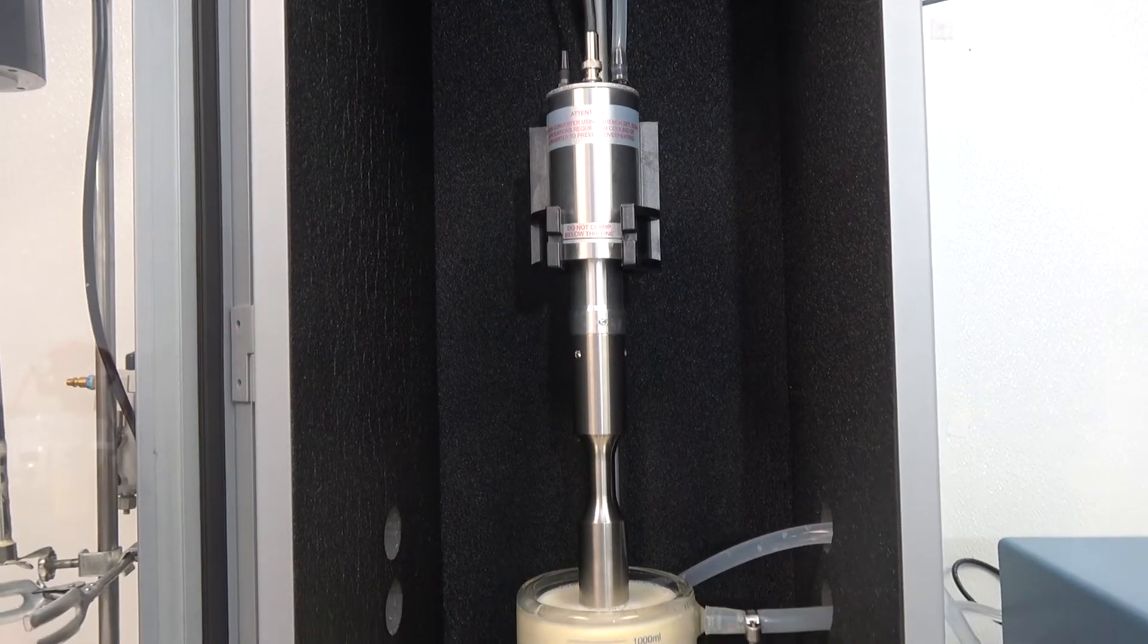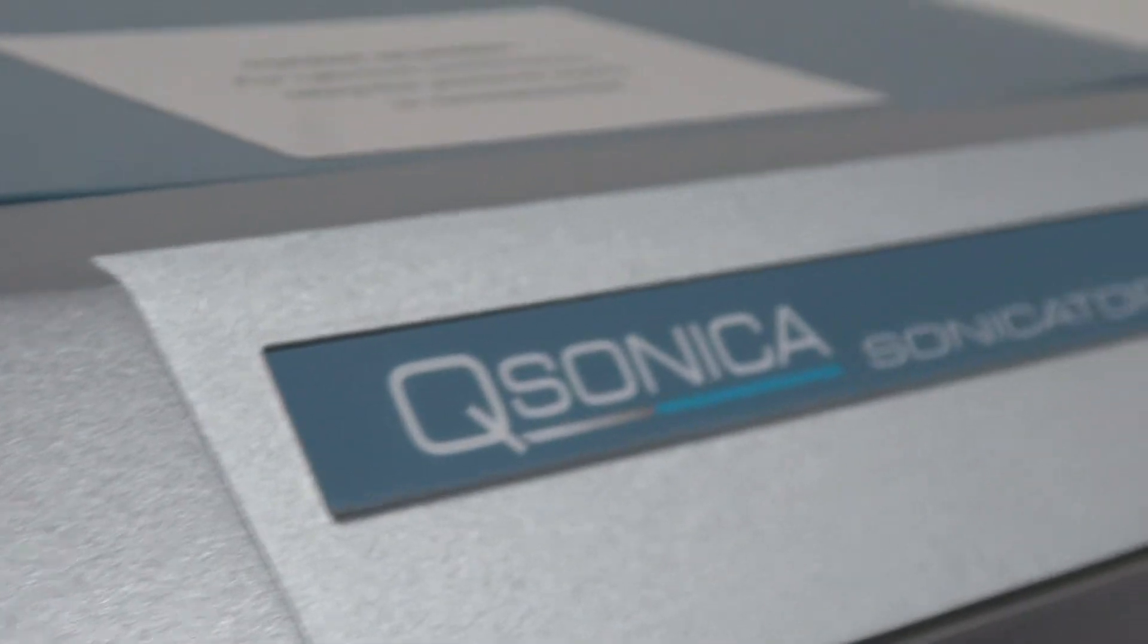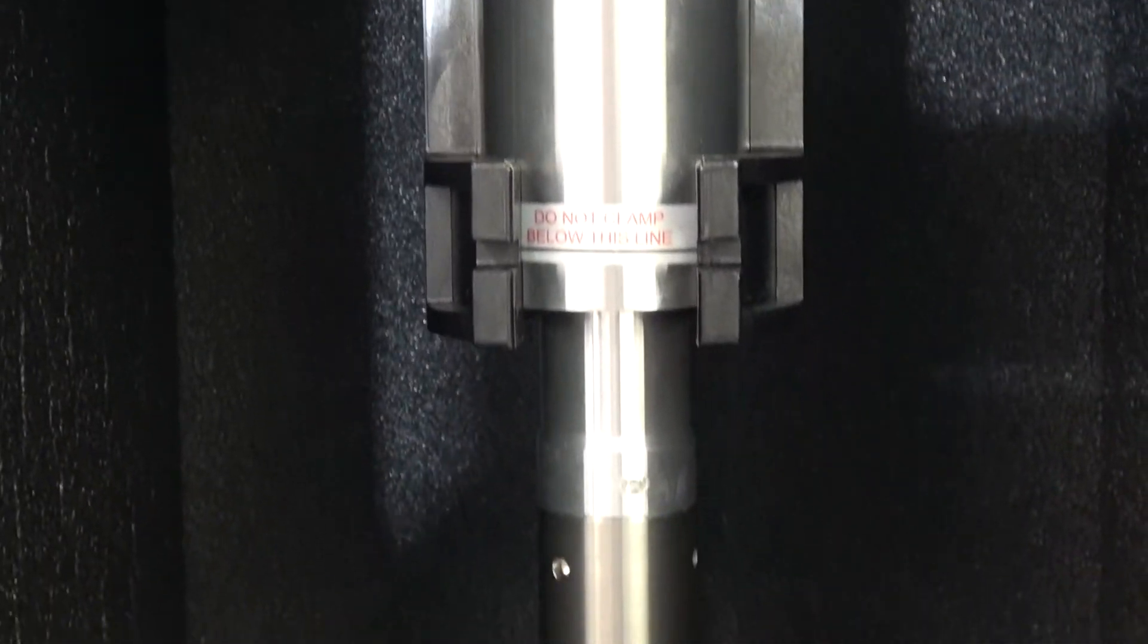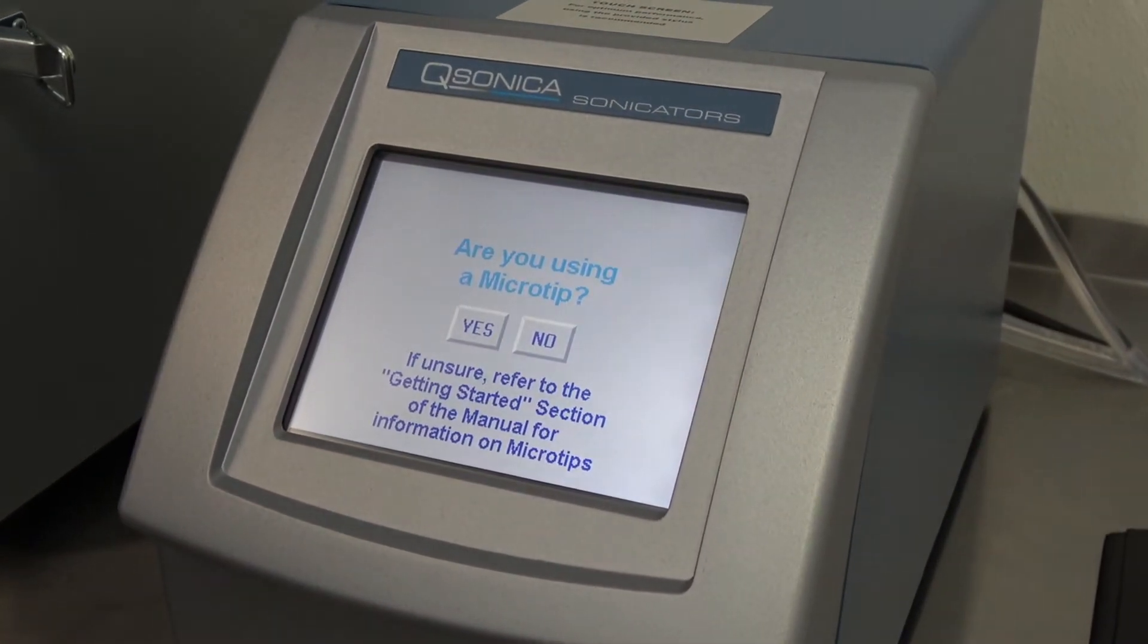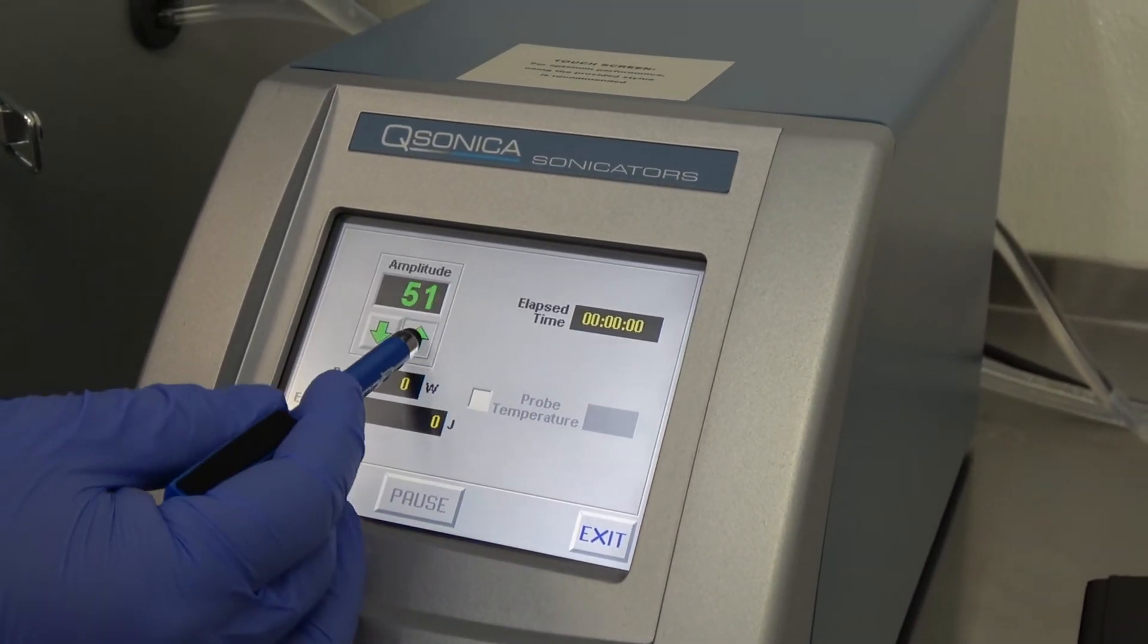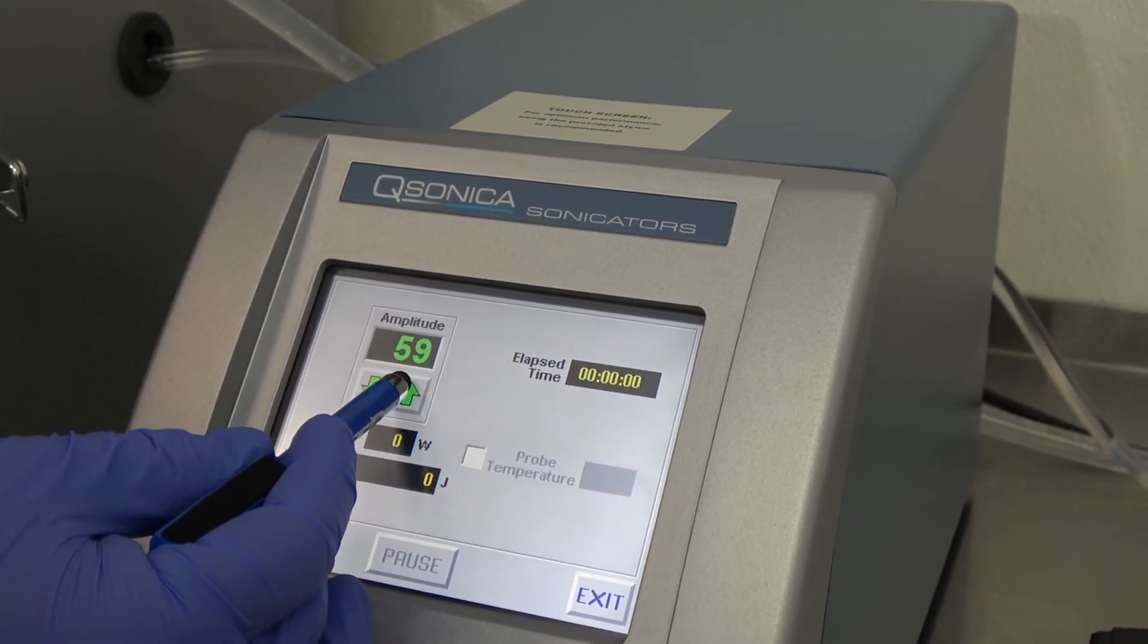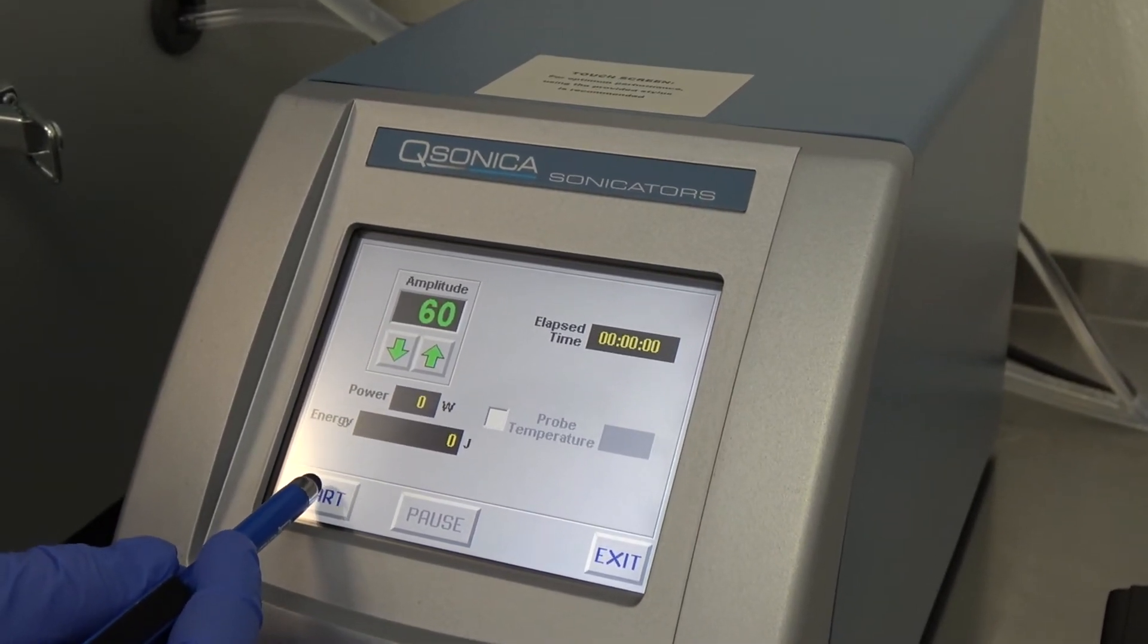Ensure your probe is adequately submerged and we're ready to initiate sonication. The Qsonica Q700CA is perfect for large laboratory scale production or light commercial scale production of nano emulsions. Start up your sonicator, click to operate manually and set your amplitude to 60 microns. After 2 minutes of processing, we'll increase amplitude to 80 microns. Click the start button to initiate sonication.